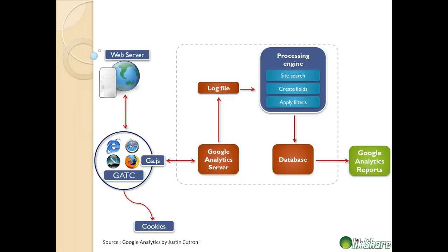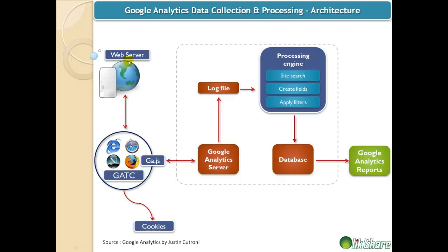Let's look at the high-level architecture. Data collection starts when the user requests a page from the web server. When the visitor's browser reaches the GTAC code — which is nothing but the Google Analytics tracking code — it starts to execute. GTAC code is a simple JavaScript code which sits within your website. It captures visitors' environment information and stores it in first-party cookies. At the same time, GTAC downloads the ga.js file, which does the heavy lifting of capturing the data. It then writes information about page views, events, and other configuration settings to a temporary log file.